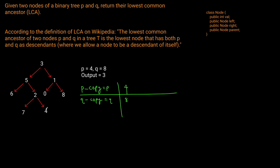So we start at four and eight. Is four equal to eight? No. So we go into the parents — p_copy becomes two and q_copy becomes one. Does two equal one? No. So we go into the parent of each: p_copy goes to five and q_copy goes to three. Does five equal three? No, so we keep going into the parent. p_copy goes to three, and q_copy's parent is actually none because it's the root — so q_copy becomes null.